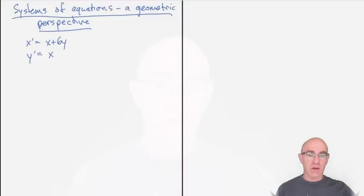Here you have a system of equations: x prime equals x plus 6y and y prime equals x.